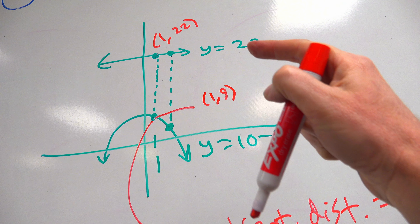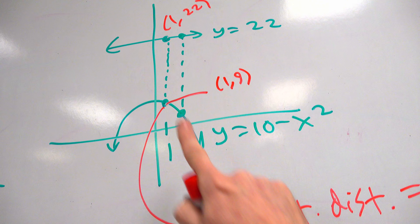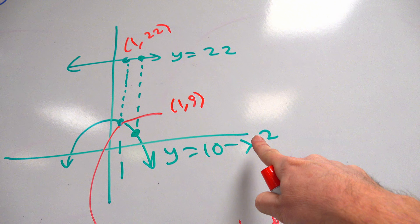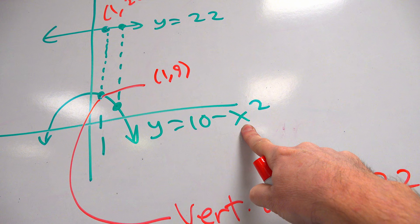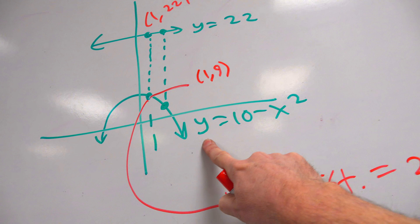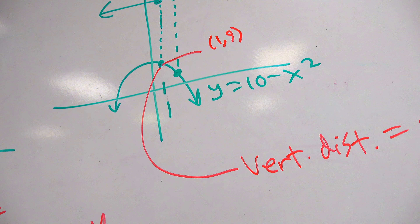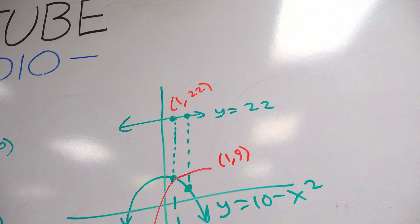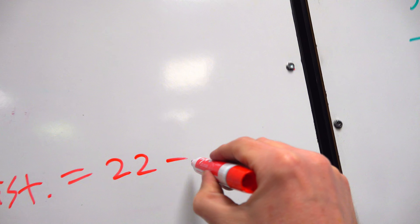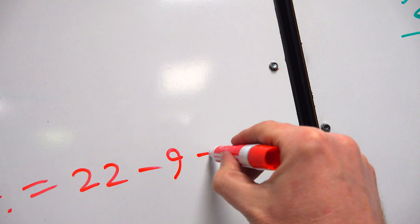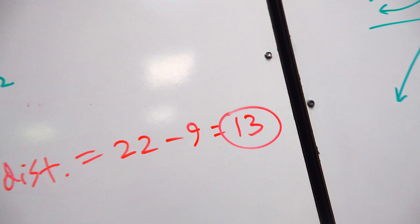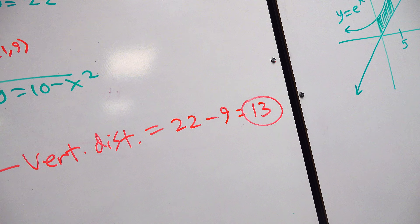Even when they're not given, you can still find them if I give you an equation. Where do Y coordinates come from? They come from the X coordinate plugged into the equation. That's where Y coordinates come from. So it's 22 minus 9, which is 13. There's your final answer for that one.